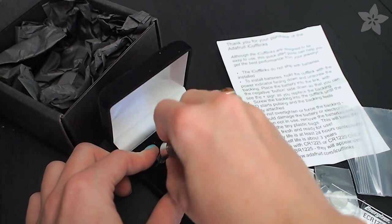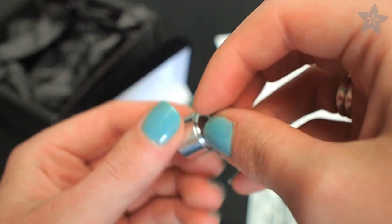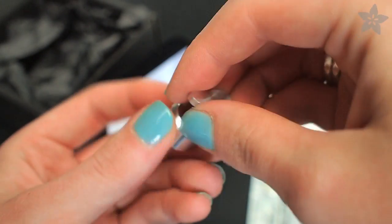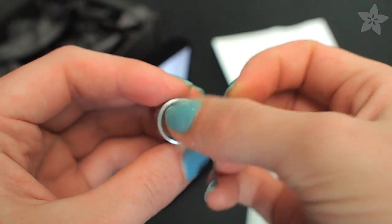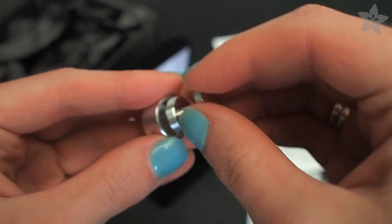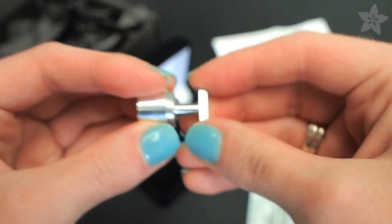It's easy to get your cufflinks glowing. Just take them out of the box and unscrew the back piece. Insert the battery into the front piece with the plus side facing out and then screw the back piece back in.